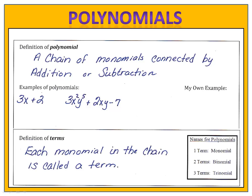Each of those monomials in the chain is called a term. Our first example had two terms, and our second example had three terms. Sometimes when we have a polynomial, we'll refer to it based on the number of terms that it has. Most commonly, one term is a monomial, two terms is a binomial, and three terms is a trinomial.